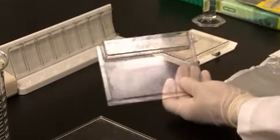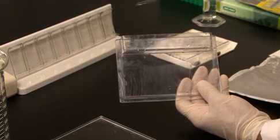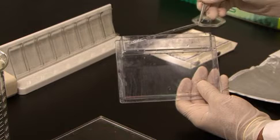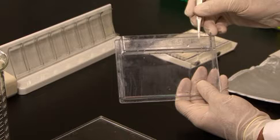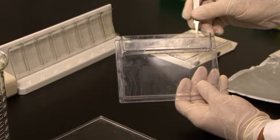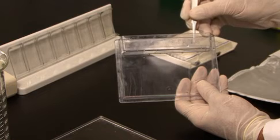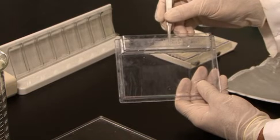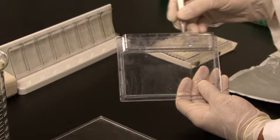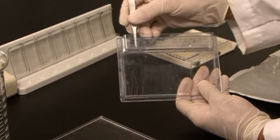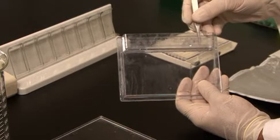Place the IPG strip gel side up. Place the plastic backing against the back of the cassette. Position the strip centered in the middle of the well with your forceps and gently push on the strip until it touches the gel. You can tell when it is touching because you will feel a little bit of springiness, a little bit of resistance. Don't push too hard.